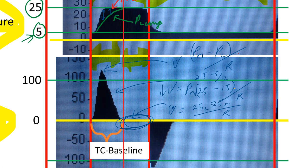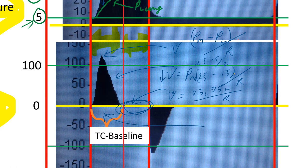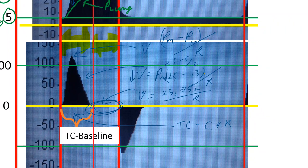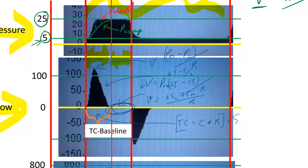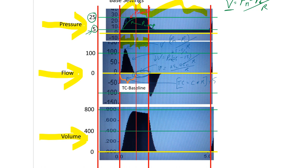The concept of how long this filling takes is called the time constant, and we know that time constant equals compliance times resistance. It takes about five time constants to achieve total filling — that is, equilibrium between mouth pressures and lung pressures. With our present settings — pressure of 25 and baseline of 5 — we have a pressure gradient of 20, resulting in our inspiratory flow and a tidal volume delivery of about 800 mL.